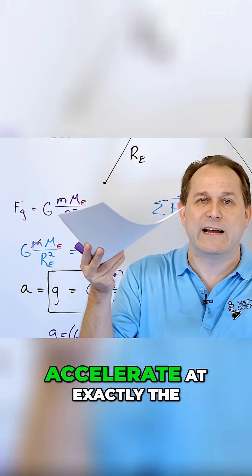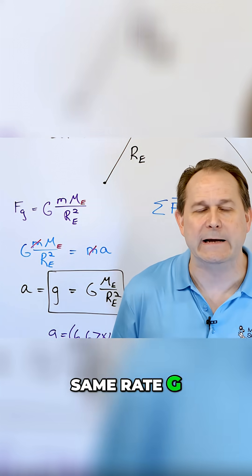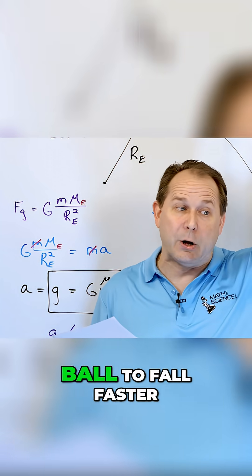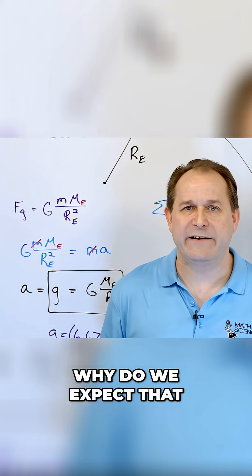Which means they both accelerate at exactly the same rate, G. Now that's weird, because we expect a bowling ball to fall faster. Why do we expect that?